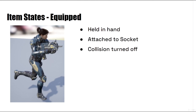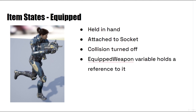The collision for the weapon should be turned off. We don't need it to collide with anything in the world. This also means that the area sphere and the collision box are not going to respond to any sort of line trace or any other sort of collision. The equipped weapon variable will hold a reference to it, so there will only be one equipped weapon at a time and we can always access that through our equipped weapon variable.